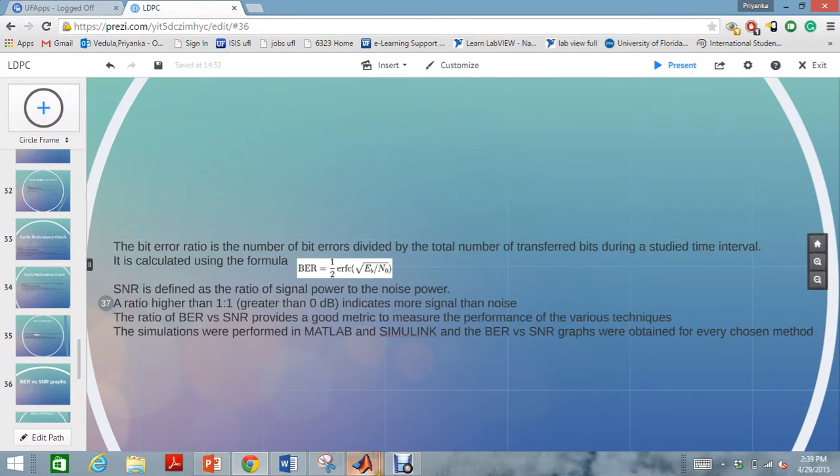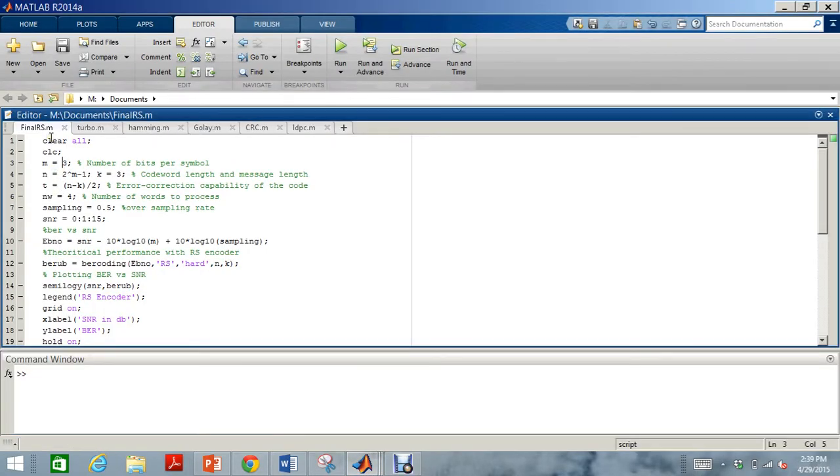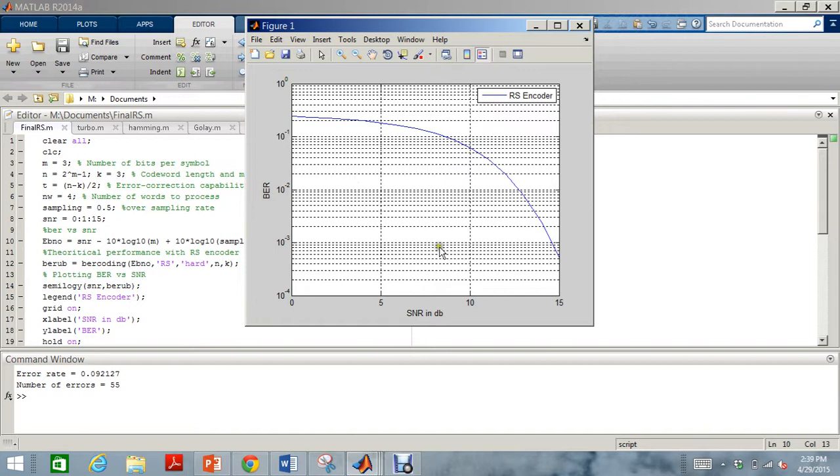Now I am going to give a demo of my MATLAB codes. This is the MATLAB code written for the Reed-Solomon code. If I run it I am going to get the number of errors which were rectified and the BER versus SNR graph. The error rate in this case was 0.0921 and the number of errors rectified was 55.